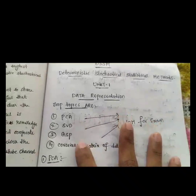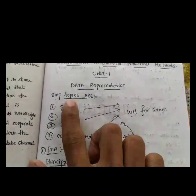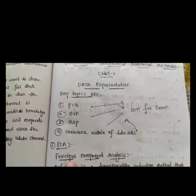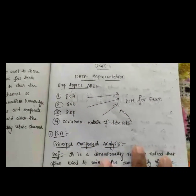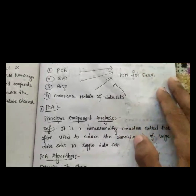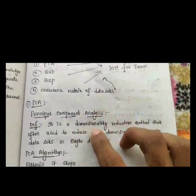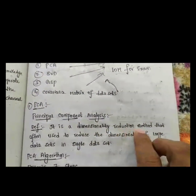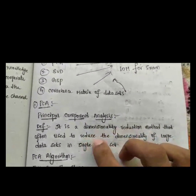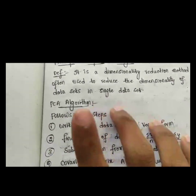Coming to the first concept: PCA. PCA means Principal Component Analysis. The definition of Principal Component Analysis is — it is a dimensionality reduction method that is often used to reduce the dimensionality of large datasets into a single dataset. To solve every problem we have to follow the PCA algorithm.